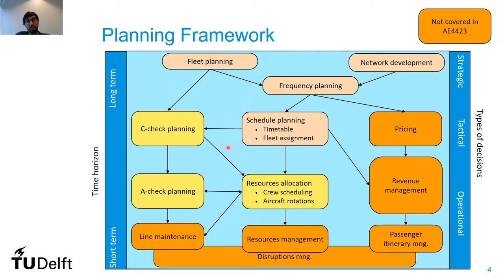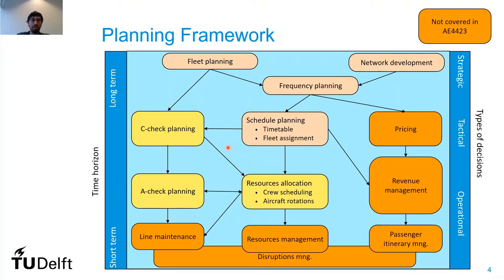For passengers, fleet assignment is done months before. The reason why for cargo we use such a short time frame between taking decisions and implementing them is that for many airlines — most of them dealing with cargo — the booking window to order a request on a specific flight opens no sooner than two weeks before departure. For passenger operations, you can buy your ticket now for exactly one year from now. So the time window is much wider for passengers. We are still dealing with a tactical level, but for cargo it's much closer to the actual day of operations.